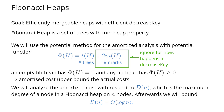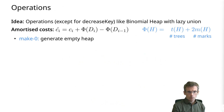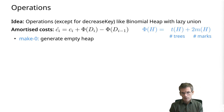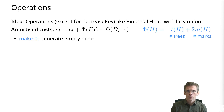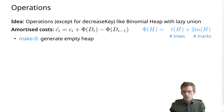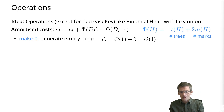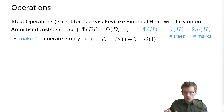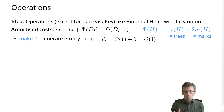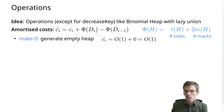Let's go through some operations and compute the amortized costs — always actual cost plus change in potential. Generating an empty heap can be done in constant time; we just make a list, we don't create trees. The actual cost is O(1), no change in potential, amortized cost is O(1).